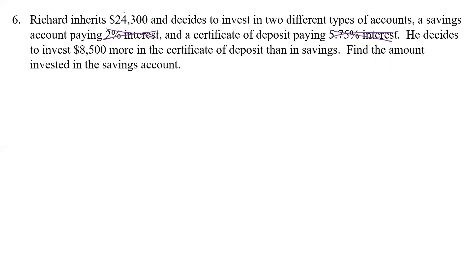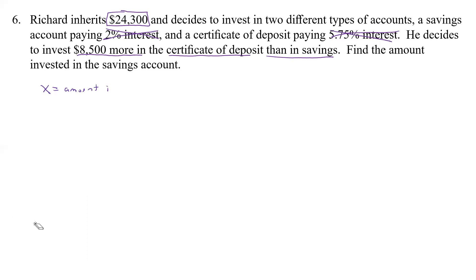What's important is that he inherited $24,300 total and wants to invest $8,500 more in the CD than in savings. So let X equal the amount invested in savings. Then X plus $8,500 is the amount invested in the CD.